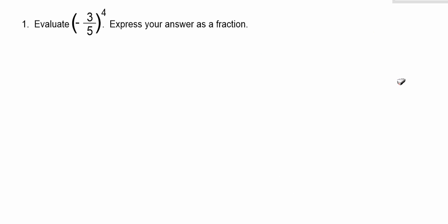Here's the first question. Evaluate the fraction negative 3 over 5 to the exponent 4 and express your answer as a fraction. So one way of doing this question is to not remember your exponent laws very well but to know what exponent 4 means. It means take the base and multiply it by itself four times. So this is what it would look like. Numerators multiplied together, denominators multiplied together.